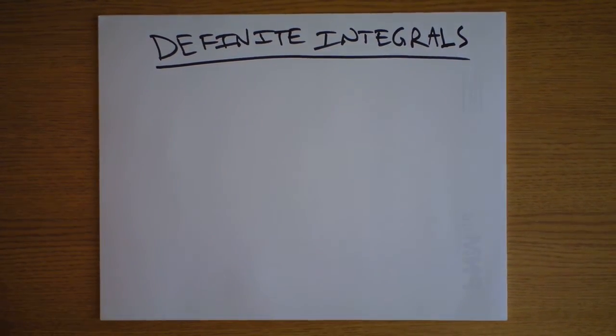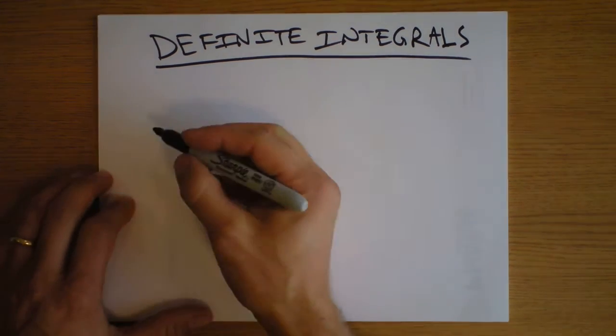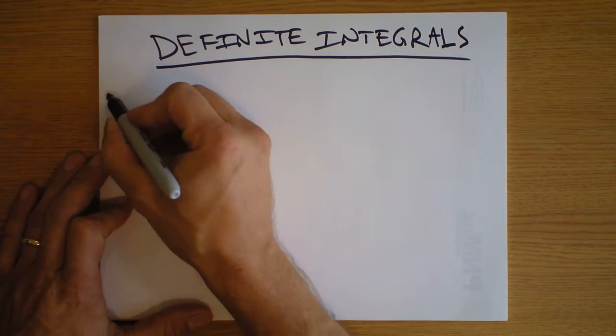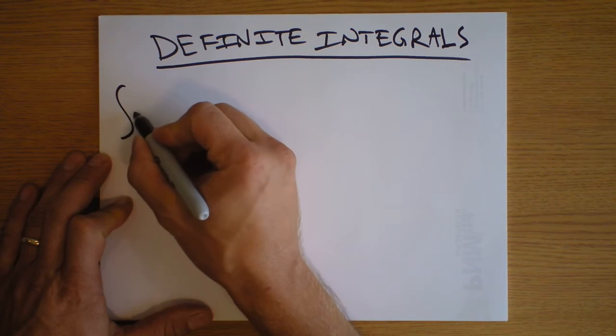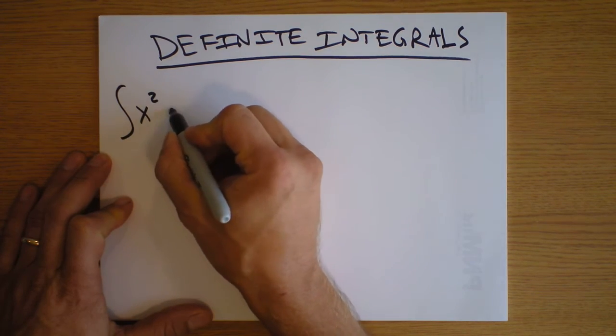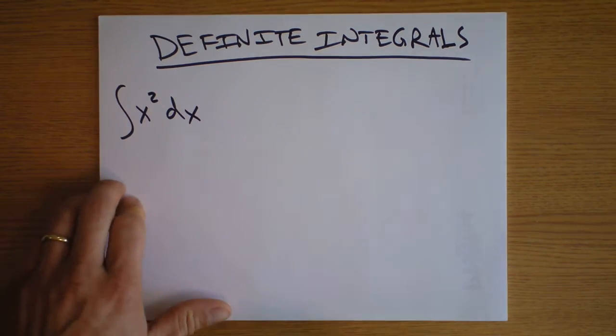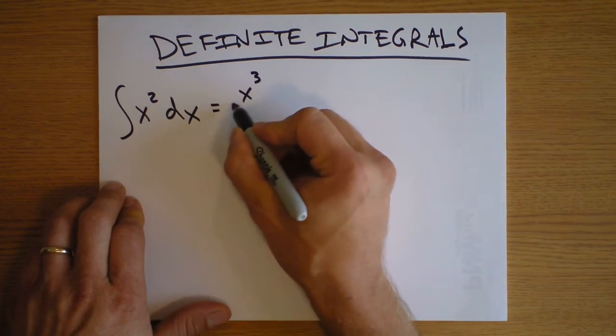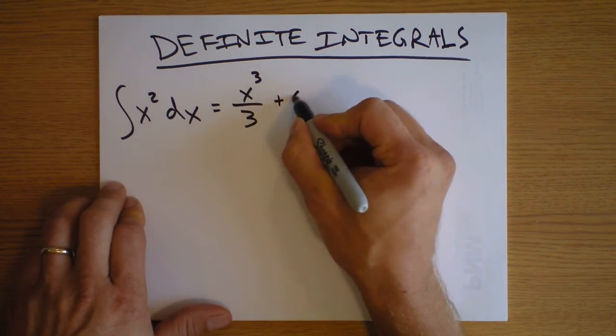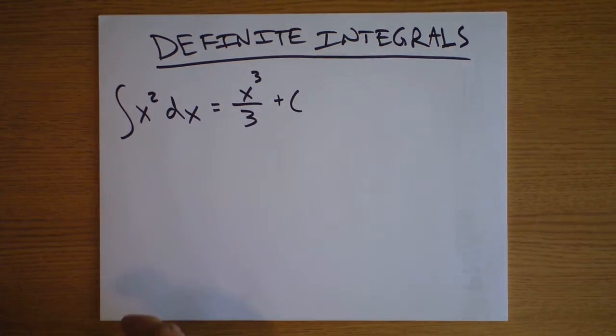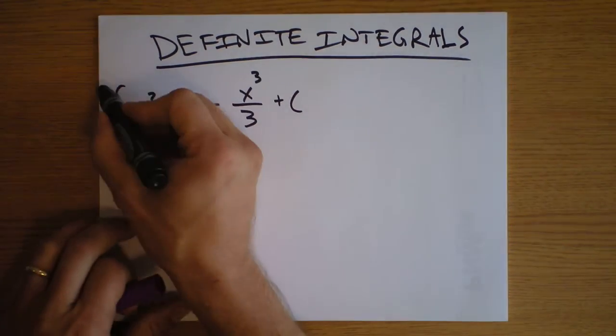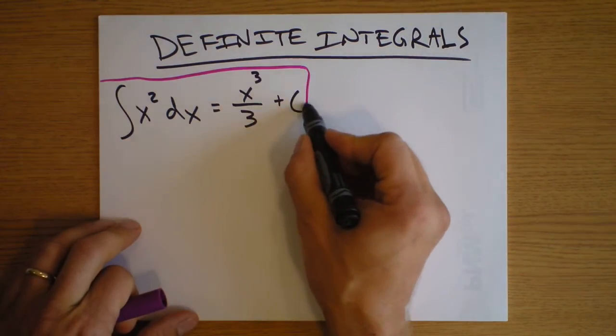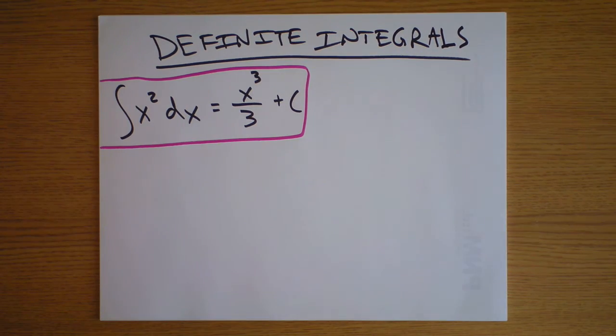The idea is, when you write an integral like this, I'll have to put this in a little box because this is not a definite integral. When you write an integral like this, the answer is x³/3 plus a constant. This is an indefinite integral, so it belongs in our previous work.